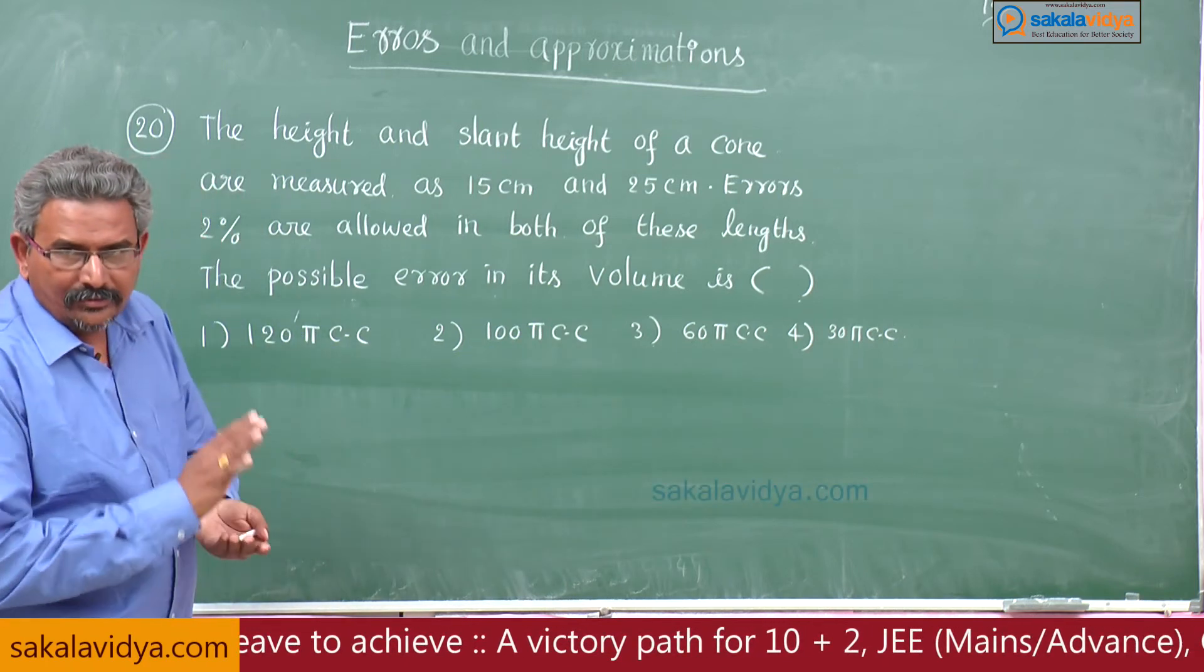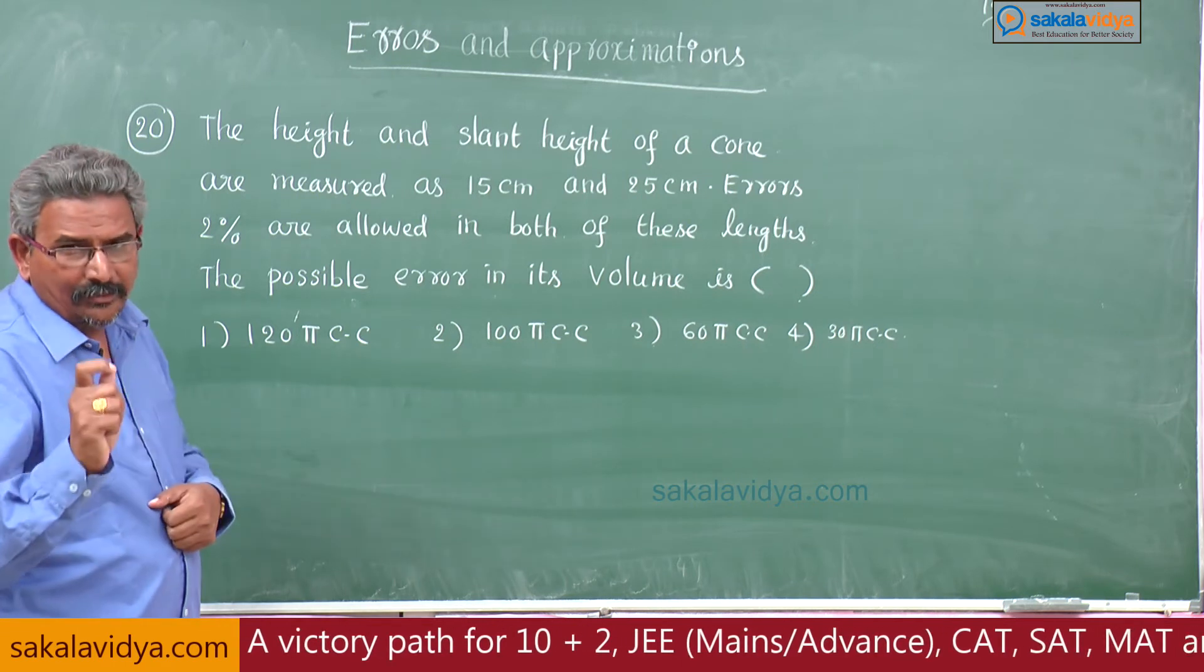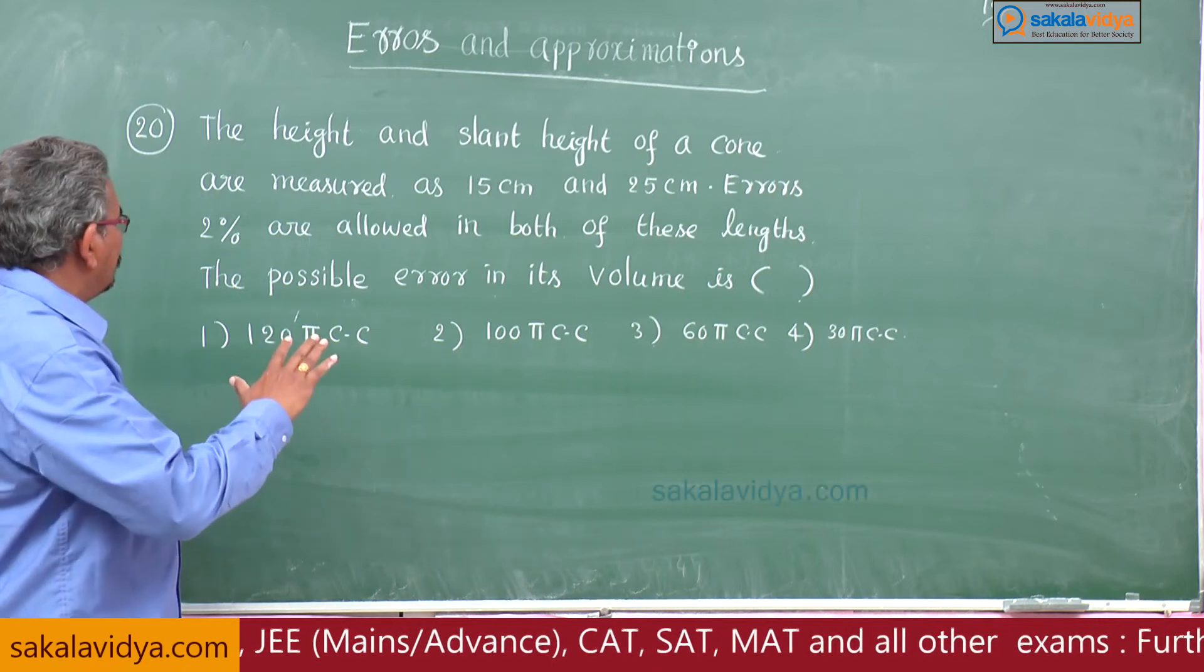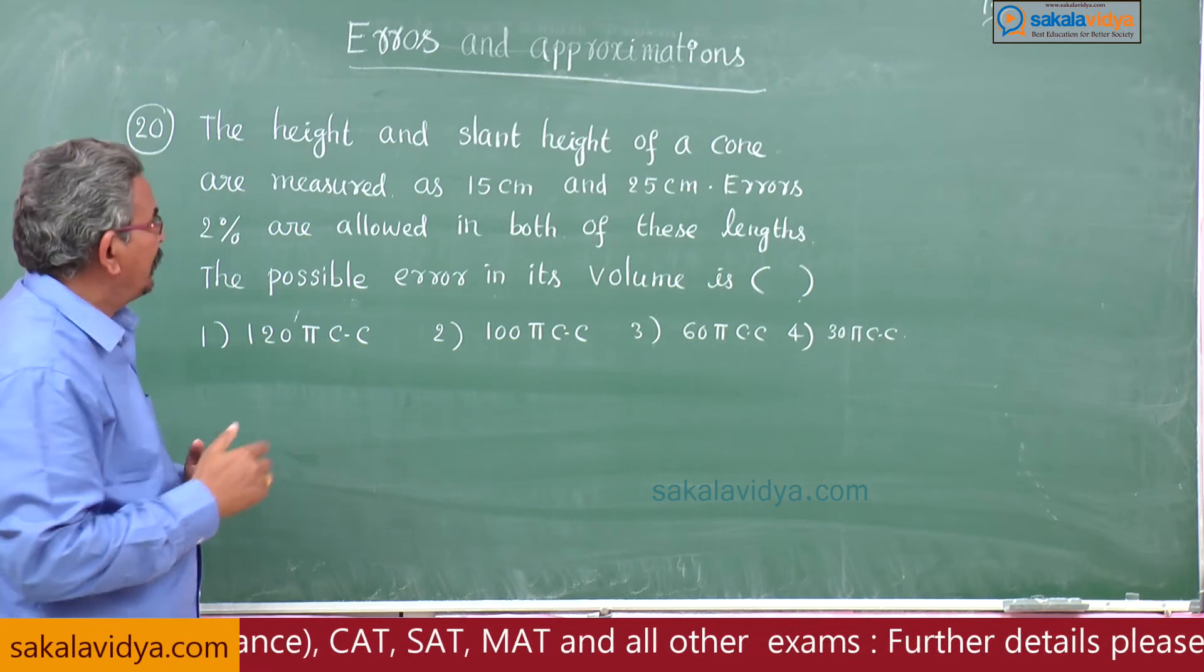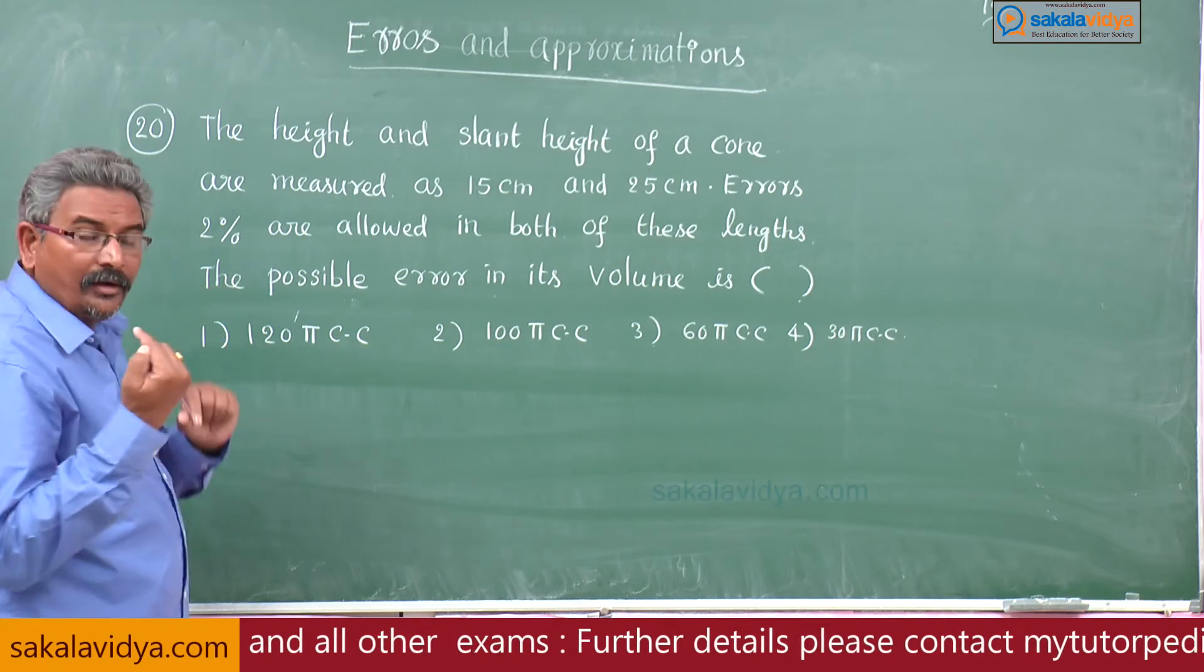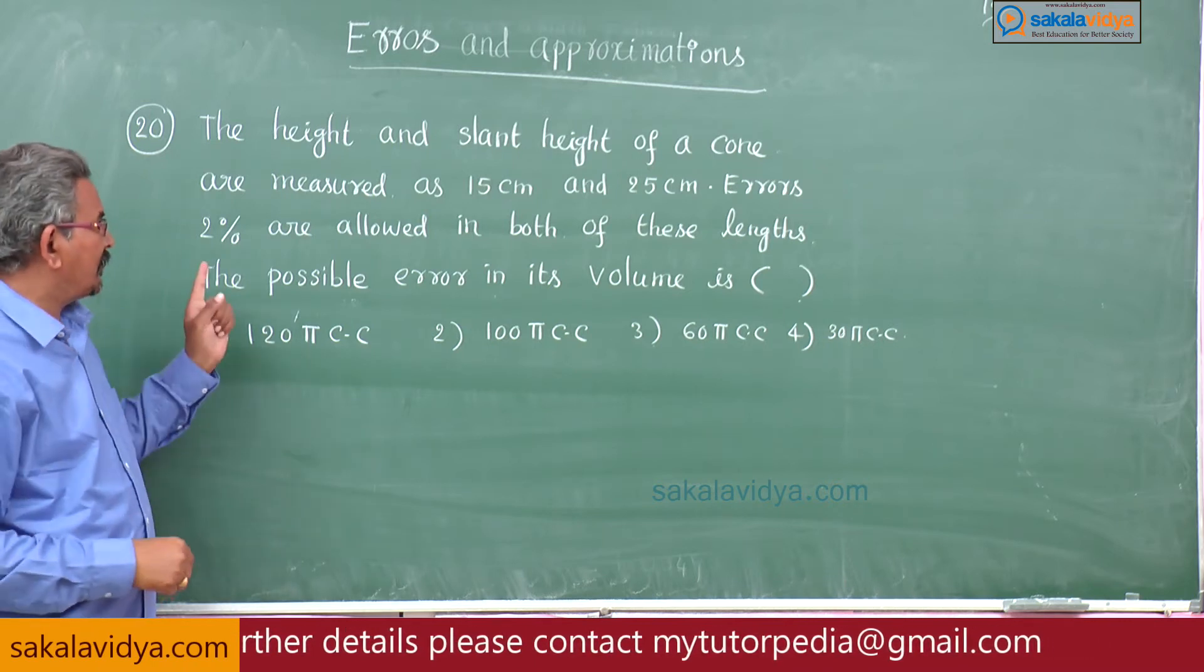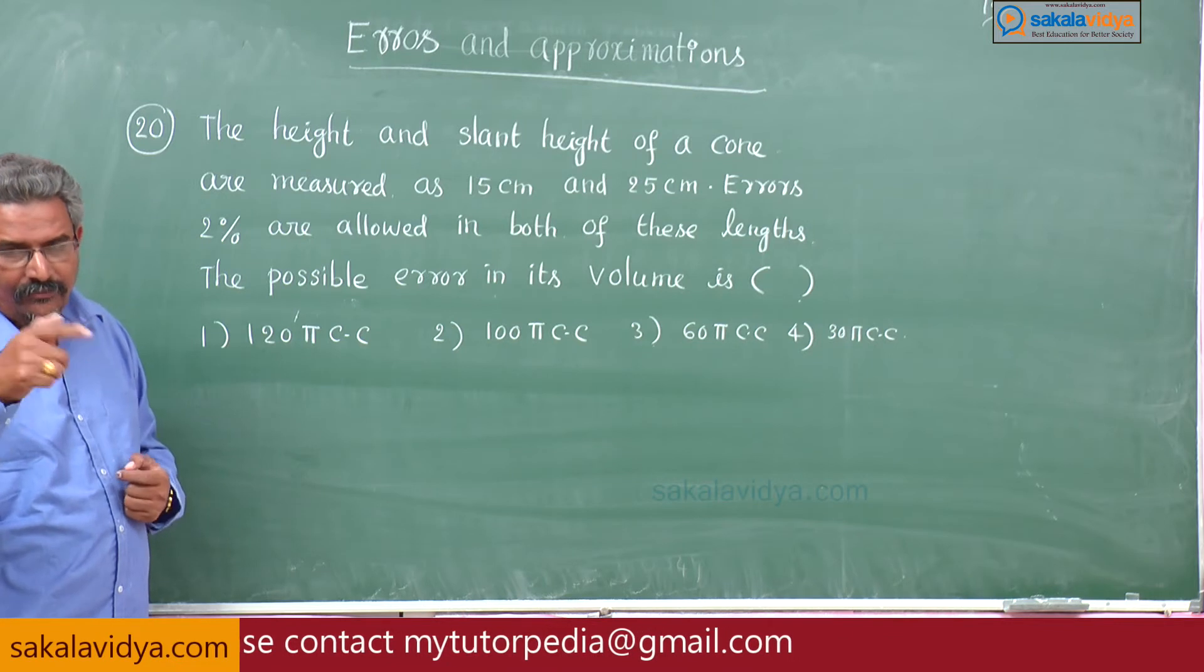That means regarding this problem, height h is 15 centimeters, slant height l is equal to 25 centimeters. Errors in both these lengths are 2 percent each. That means delta h is equal to delta l, where delta l by l into 100 equals delta h by h into 100 equals 2 percent given.